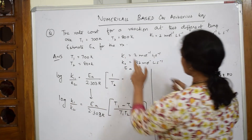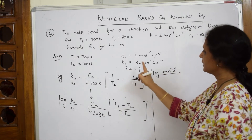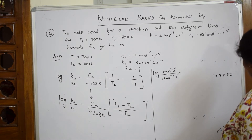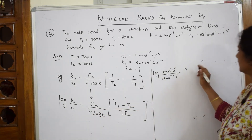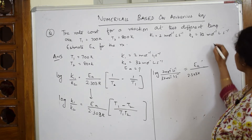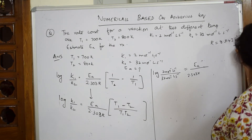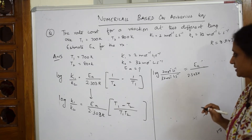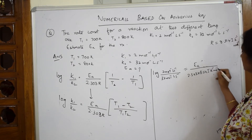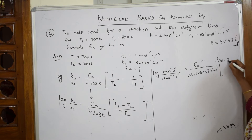Now substituting the values: log K1 by K2 — that is log 2 mole inverse litre second inverse divided by 32 mole inverse litre second inverse — is equal to Ea by 2.303, multiplied by R which is 8.314 Joule Kelvin inverse mole inverse, into T1 minus T2 which is 700 minus 800 K, divided by T1 into T2 which is 700 into 800.